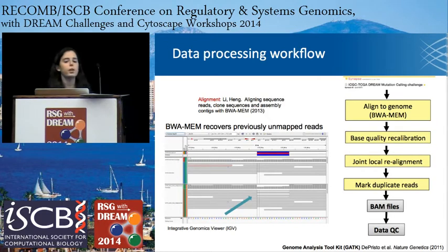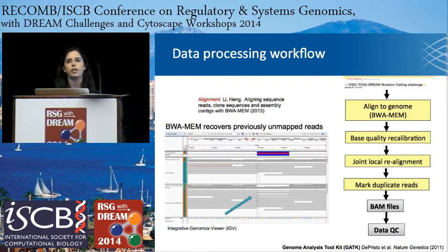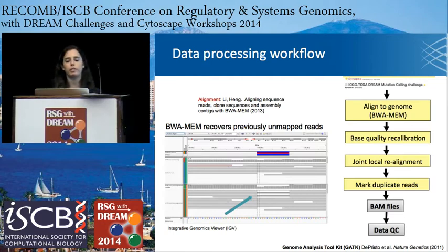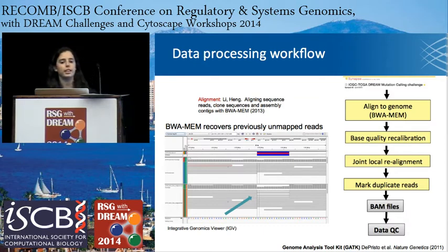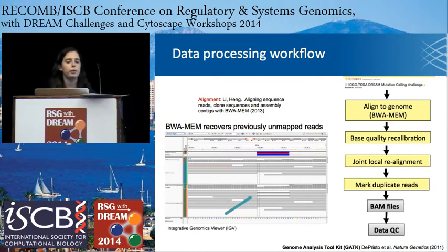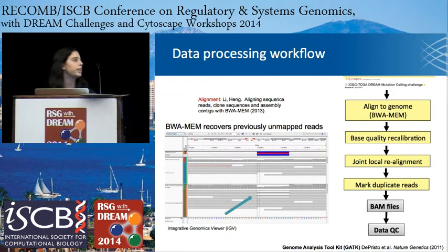The Broad Institute has a widespread pipeline for processing sequencing data from the raw FASTQ files through to a finally processed BAM file ready for analysis. We utilized this workflow for the Dream Challenge as well. When we initially downloaded the data from Synapse, we chose to realign the data with BWA MEM, which is a recent aligner developed by Heng Li — the second version as opposed to the original BWA. We chose to do so because we found that it recovers many previously unmapped reads, specifically reads with long deletions in them.